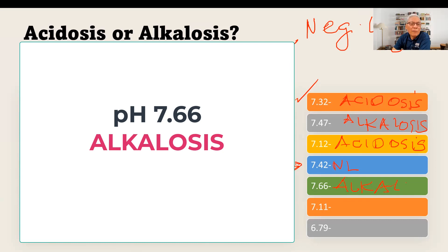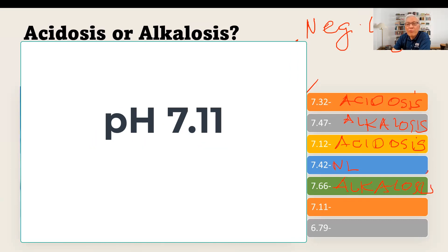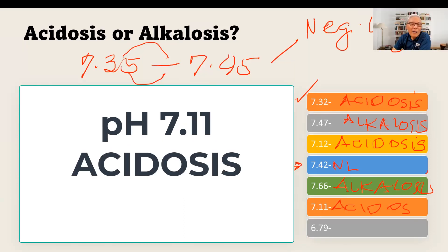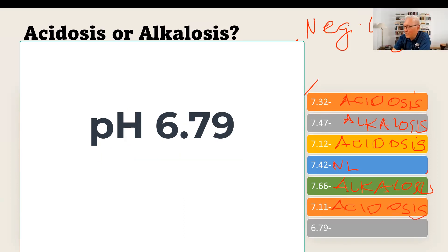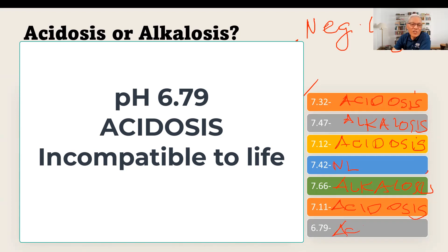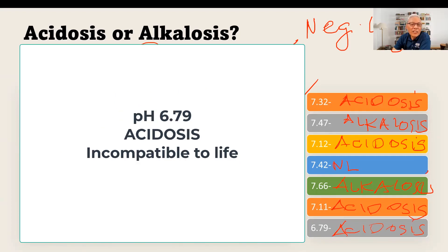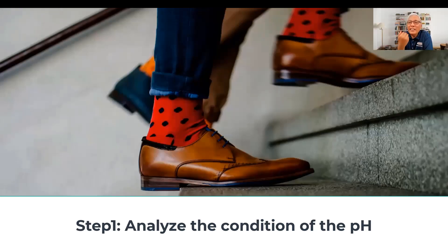How about 7.11? Acidosis. And 6.79? Acidosis — it has too much hydrogen, and this level is usually incompatible with life. They say that when you have a pH of 7.0, you're six feet under the ground. So we have finished identifying the state of the pH.